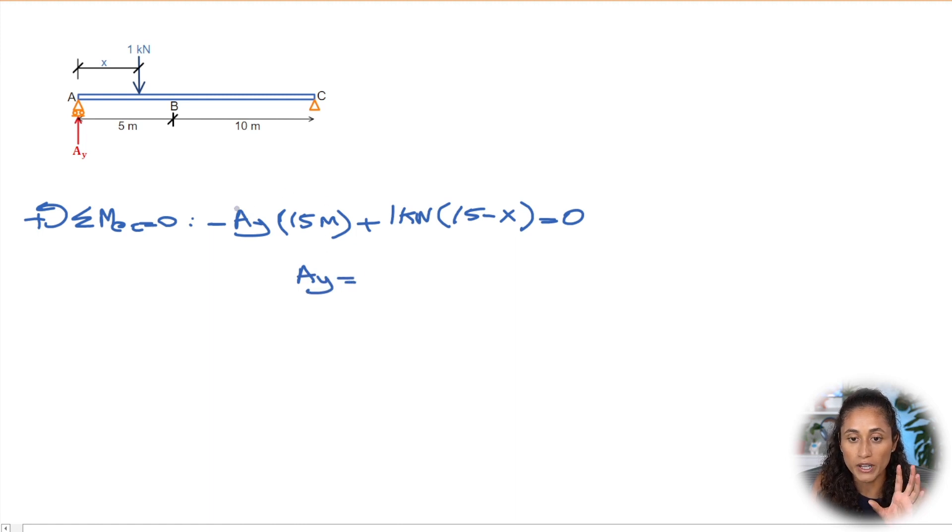So if we do that, we're gonna take this term to the other side. So then we're gonna have AY positive and then we're gonna have 15. So what I'm gonna do here is just expand. So 1 times 15, that's just gonna be 15. And then we're gonna have minus 1 times X, that's just gonna be X. And then we're gonna divide the whole thing by 15. We can simplify this a little bit more. So we have 15 over 15, that's gonna be 1. And then we're gonna have minus X over 15.